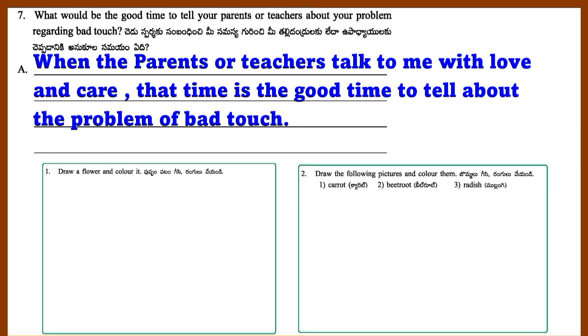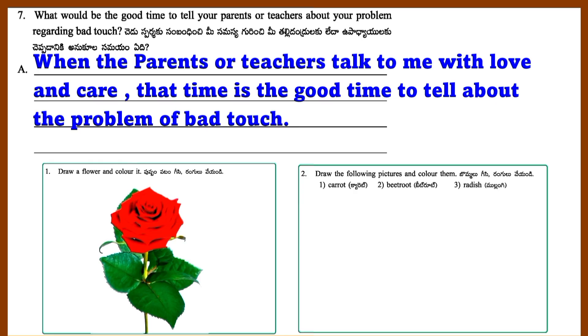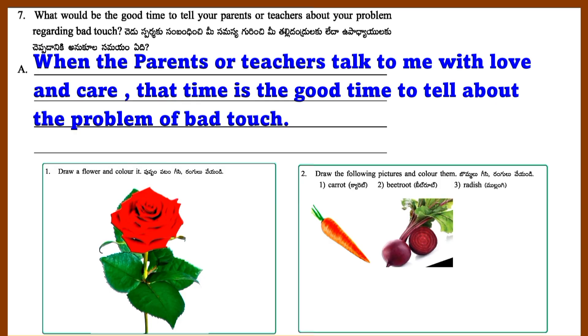Activity answers: 1. Draw a flower and color it. 2. Draw the following pictures and color them — Carrot, Beetroot, Radish.